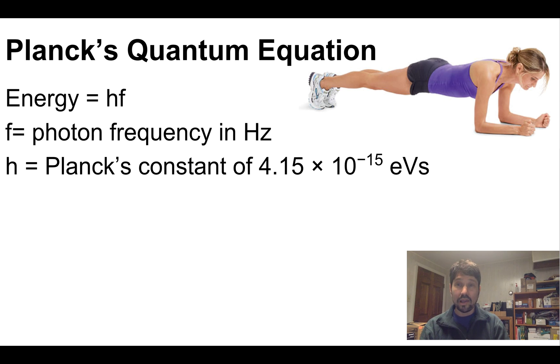Planck's quantum equation tells us that energy is calculated by multiplying frequency in Hertz by Planck's constant. And that's a new number for you to memorize: 4.15 times 10 to the negative 15th electron volt seconds. That's probably the most useful one to memorize. The other format sometimes useful is 6.63 times 10 to the negative 34th joule seconds.